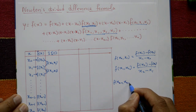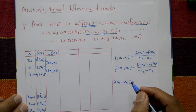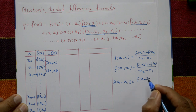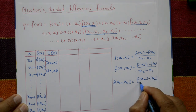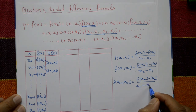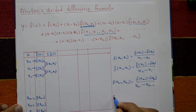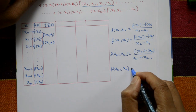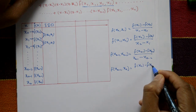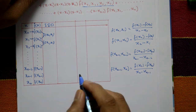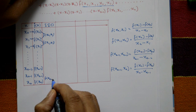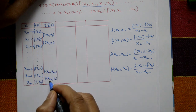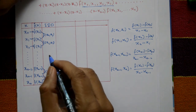Similarly, continuing the pattern: f[xₙ₋₂, xₙ₋₁] = (f(xₙ₋₁) - f(xₙ₋₂)) / (xₙ₋₁ - xₙ₋₂). And the last first divided difference: f[xₙ₋₁, xₙ] = (f(xₙ) - f(xₙ₋₁)) / (xₙ - xₙ₋₁). These are the first divided differences.